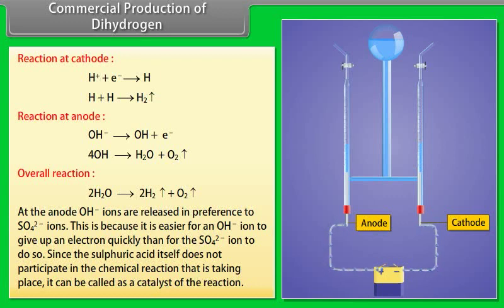At the anode, OH minus ions are released in preference to SO4 2 minus ions. This is because it is easier for an OH minus ion to give up an electron quickly than for the SO4 2 minus ion to do so. Since the sulfuric acid itself does not participate in the chemical reaction that is taking place, it can be called as a catalyst of the reaction.